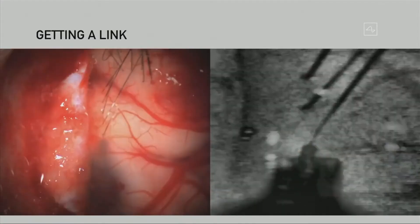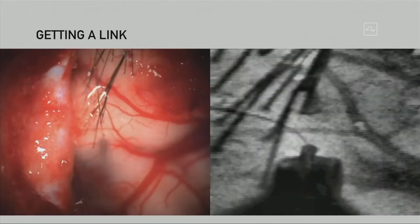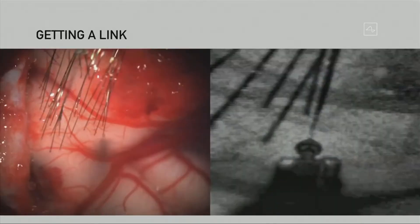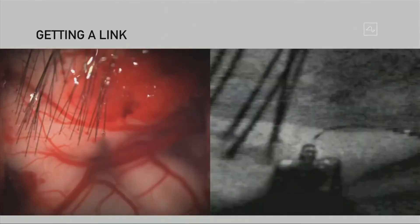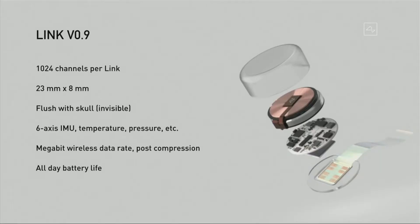In my brain, the Neural Link device is implanted and I am able to charge this brain device every day via wireless charging, and it has wireless connectivity with Bluetooth features. This Bluetooth range is 5 to 10 meters radius.